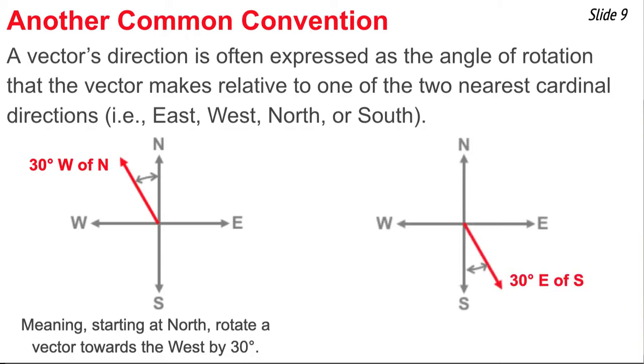Here's a second example. We could describe this vector as being 30 degrees east of south. In saying it this way, we mean start the vector at south and then rotate it one way or the other. Your two possibilities are east or west. In this case, we're rotating it towards the east,